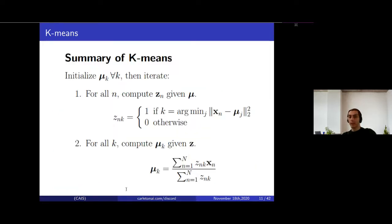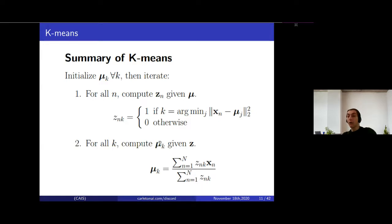The k-means algorithm works as follows: we start with random initial cluster centers, then iterate. In each iteration we measure the distance between each sample and all cluster centers and assign value 1 to the closest cluster center — so for sample n we find the smallest distance to mu_1 through mu_K and set z_nk to 1 for that cluster and 0 otherwise. After calculating the assignment matrix z, we update the cluster centers by taking the average of all samples assigned to each cluster.